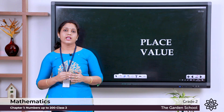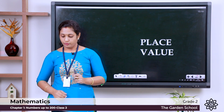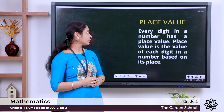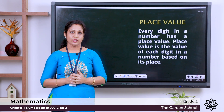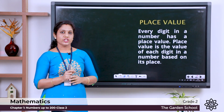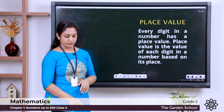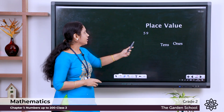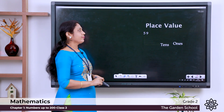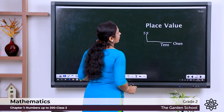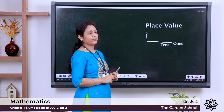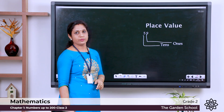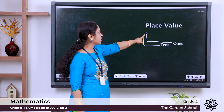So this is how we write in expanded form. Now let's move on to place value. What is place value? Every digit in a number has a place value — it is the value of the digit, and it changes according to the position of the digit. For example, the number 59 is a two-digit number: 9 comes in the ones position and 5 comes in the tens position, so we say 5 tens and 9 ones.